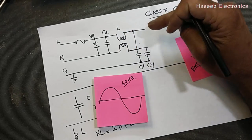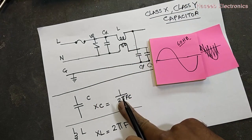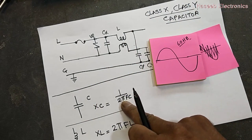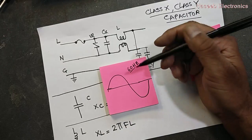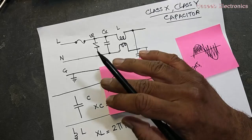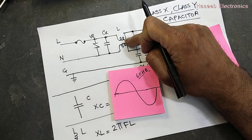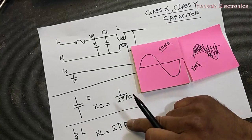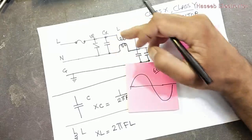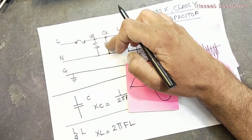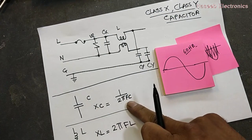At normal line frequency — say 60 Hz — this inductor is giving easy path, producing very little resistance. But when the frequency increases, its inductive reactance increases based on XL = 2πFL, giving high resistance. For the capacitor, when frequency increases its internal resistance decreases based on Xc = 1/(2πFC). So they behave oppositely with respect to frequency.